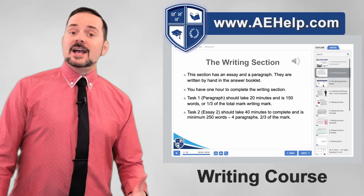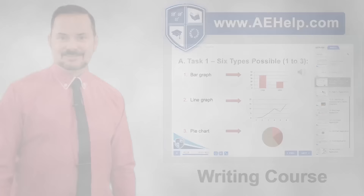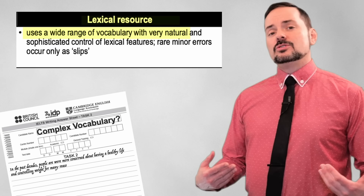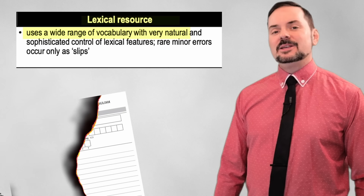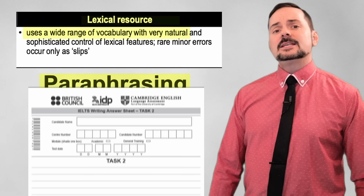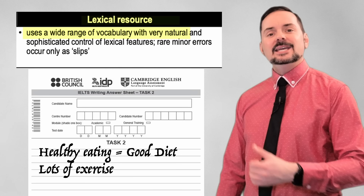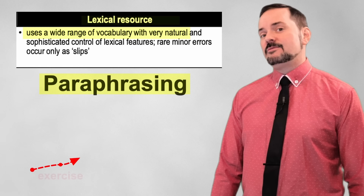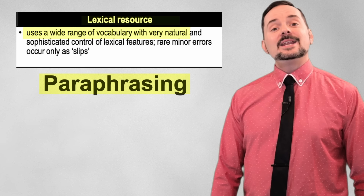When we look at the Band 9 description for lexical resource, it starts by stating that the author uses a wide range of vocabulary naturally. This does not mean using very complicated words — that's a bad idea, especially if you're making spelling mistakes. It simply means paraphrasing, especially the key words in the essay. Instead of saying 'healthy eating,' you can say 'a good diet'; instead of 'lots of exercise,' say 'playing sports.' These aren't complicated words — they're simply paraphrasing each other to avoid repetition and redundancy.